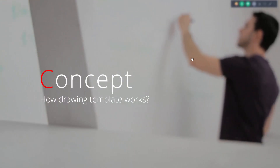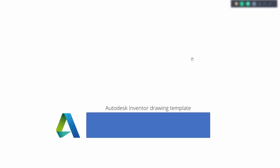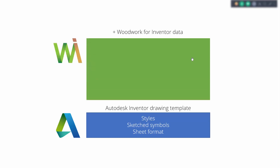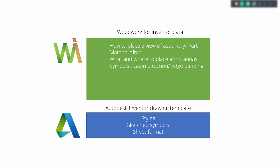Now let's find out how it works. We start from the Autodesk Inventor drawing template, which can be adjusted using the style editor. You can define your own sketched symbols, sheet formats, and more. However, it's not enough for woodworking, so we add some woodworking data to those Autodesk drawing templates. This includes information about how we can place views of assemblies or parts, filter what material is shown on drawing pages, define how and where to put annotations, what symbols should be used for grain direction, edge banding, and other elements. We can also have woodworking parameters in the title block besides the standard Autodesk Inventor parameters.